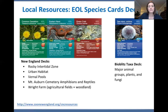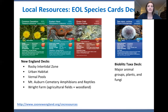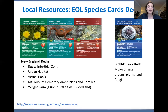The other resources available are our EOL species cards. These are like baseball cards or Pokémon cards, but for species. We have decks that cover species in New England habitats including rocky intertidal zones, urban habitats, vernal pools, Mount Auburn Cemetery, and Wright Farm — agricultural fields and woodlands. Those decks are great tools for learning about species ahead of time and can even be brought into the field. You can download the decks, print and cut them out, and they're ready to go.